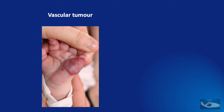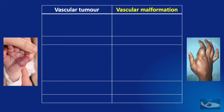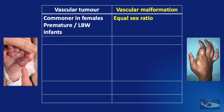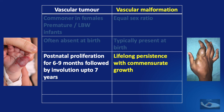We have now seen two categories: vascular tumor and vascular malformation. Let us see the differences between these two types of lesions. Vascular tumors are commoner in females, premature children, and low birth weight infants, whereas vascular malformations have an equal sex ratio. Vascular tumors are often absent at birth, while vascular malformations are typically present at birth but may not be noticed. Vascular tumors typically have postnatal proliferation for about six to nine months followed by involution that may take up to seven years.